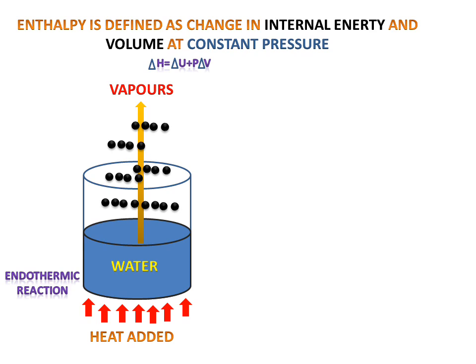An endothermic reaction is one in which the system gains heat from the atmosphere or from an external source. In this case, ΔH will be greater than zero — meaning ΔH > 0 — because heat is added to the system.